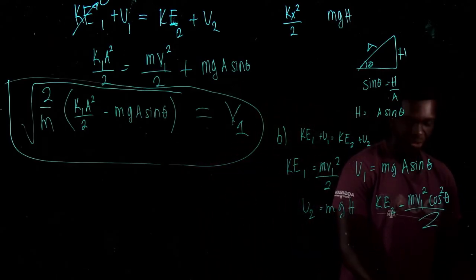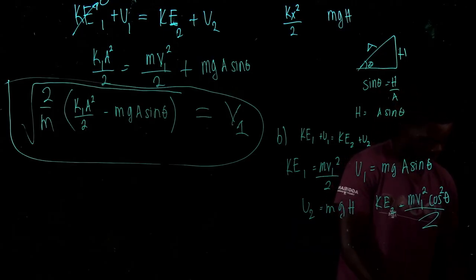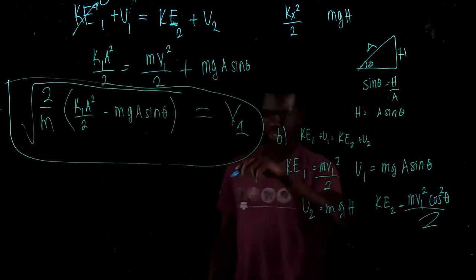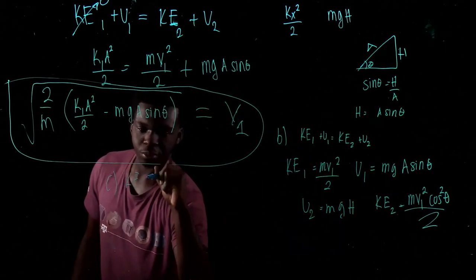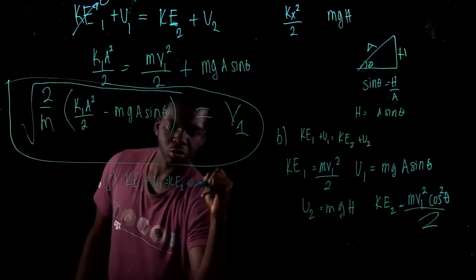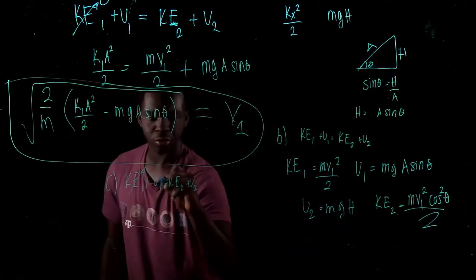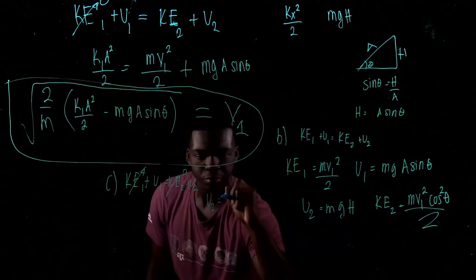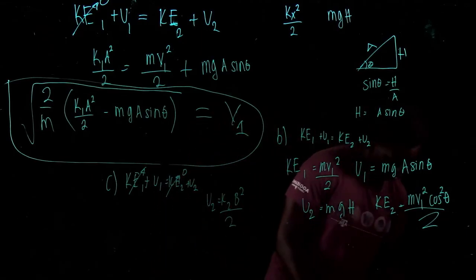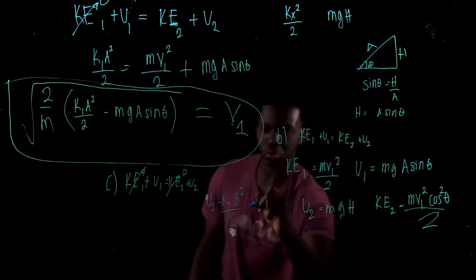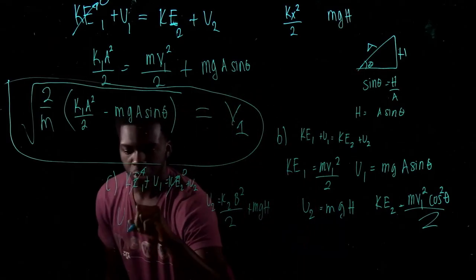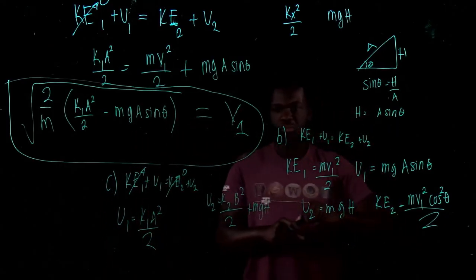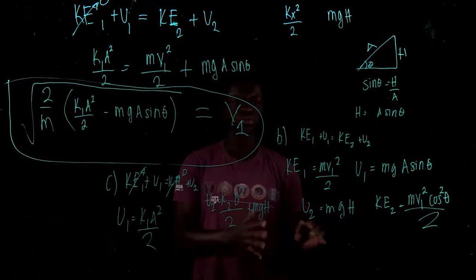For part C, find the compression distance B of the second spring (constant K2). KE1 and KE2 are both zero (starts and stops). U1 equals K1*A² over 2 (initial spring energy), and U2 equals K2*B² over 2 plus mg*H (spring PE plus gravity at height H). Setting these equal and solving for B gives the final answer. That's it for the 2019 Exam 2.